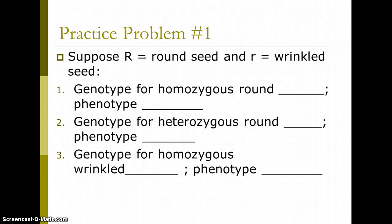So, here are phenotypes. So, suppose big R means round seeds, and little r means wrinkled seeds. Notice that we didn't use W's here. We're using R's, because it's the same gene, just different versions. So, it's the same letter, different versions, capital or lowercase. So, the genotype for homozygous round, homozygous round, would be big R, big R, and the phenotype is round.